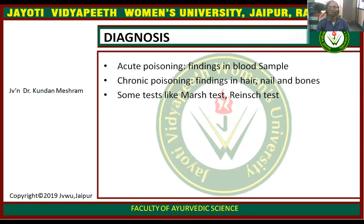Diagnosis: in acute poisoning, findings are in the blood sample; in chronic poisoning, findings are in hair, nail, and bone. Tests like Marsh test and Reinsch test can also be used for the diagnosis of arsenic poisoning.